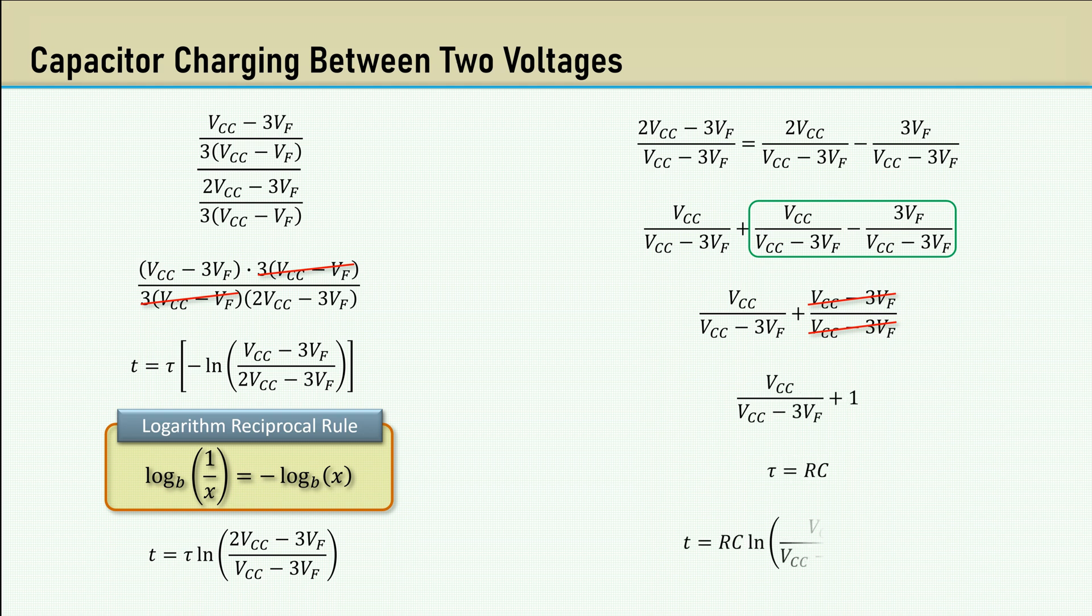Replacing tau with RC gives us this equation, the time for the capacitor to charge or discharge between one-third VCC and two-thirds VCC, with the voltage drop of the diode included. But that diode causes us a problem.